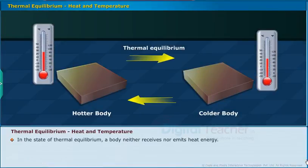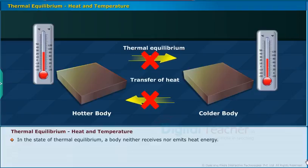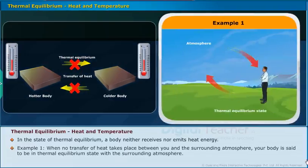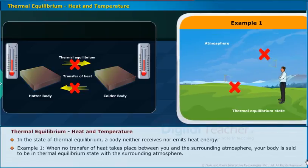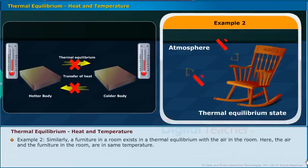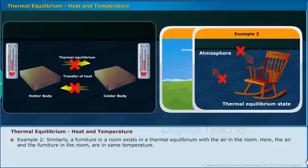In the state of thermal equilibrium, a body neither receives nor emits heat energy. Example 1: When no transfer of heat takes place between you and the surrounding atmosphere, your body is said to be in thermal equilibrium with the surrounding atmosphere. Example 2: Similarly, furniture in a room exists in thermal equilibrium with the air in the room — the air and the furniture are at the same temperature.